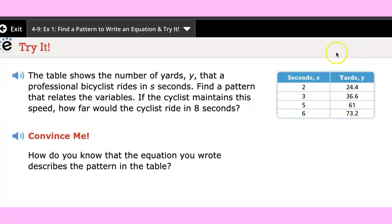We could use this table to do that. In two seconds able to make it for twenty four point four yards, and if you have six you're going to have seventy three point two yards. So the question is what will it be in eight seconds? What are the steps you're going to do to solve this problem?